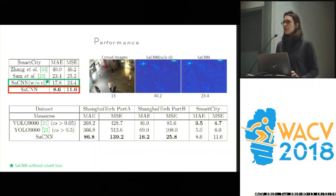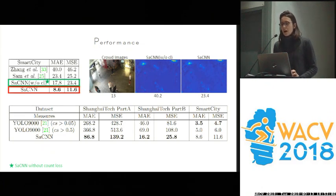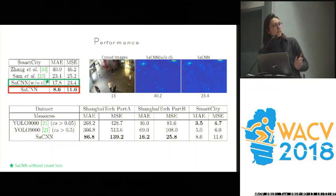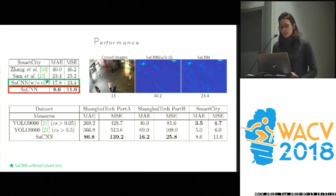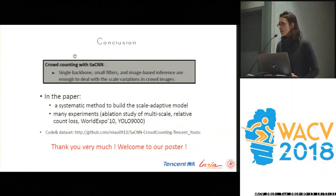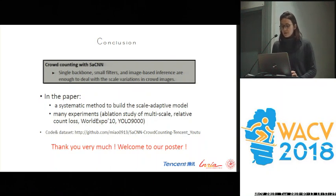They also compare against YOLO9000 as a head detector to evaluate performance on sparse images. YOLO is a very efficient detector, and on the Smart City dataset it actually performs well — better than their method. However, YOLO does not work at all on large crowd images, whereas their solution works on both sparse and dense cases. In conclusion, their solution is a very efficient single backbone with small filters, and patch-based inference is enough to handle scale variation in crowd images.